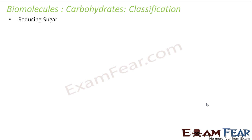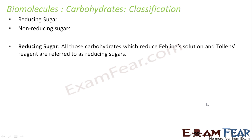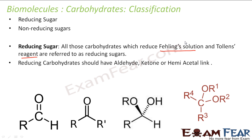Carbohydrates can also be classified as reducing sugars and non-reducing sugars. All the carbohydrates which reduce Fehling's solution or Tollens' reagent are reducing sugars, and the ones that don't reduce Fehling's solution or Tollens' solution are non-reducing sugars.